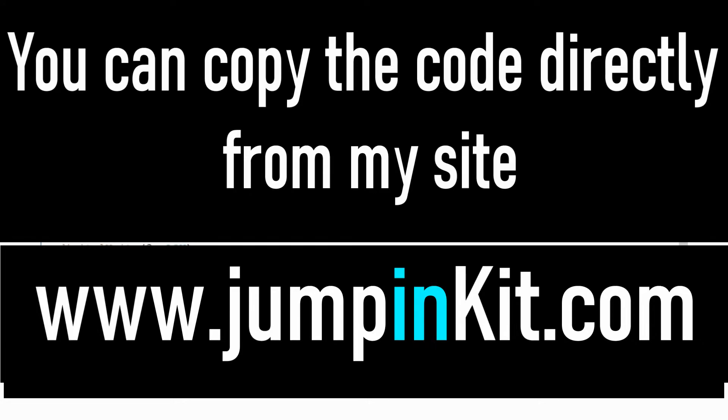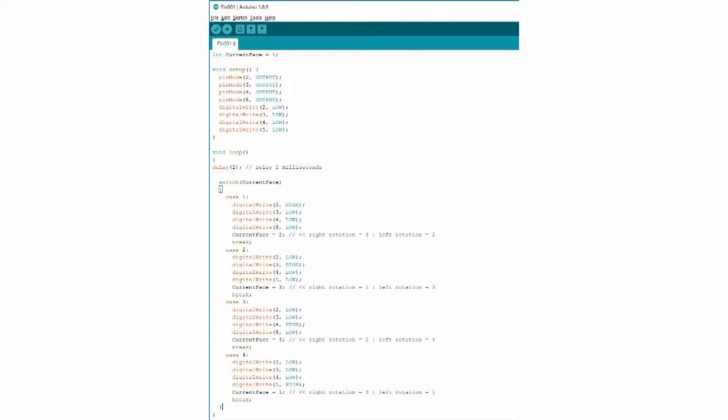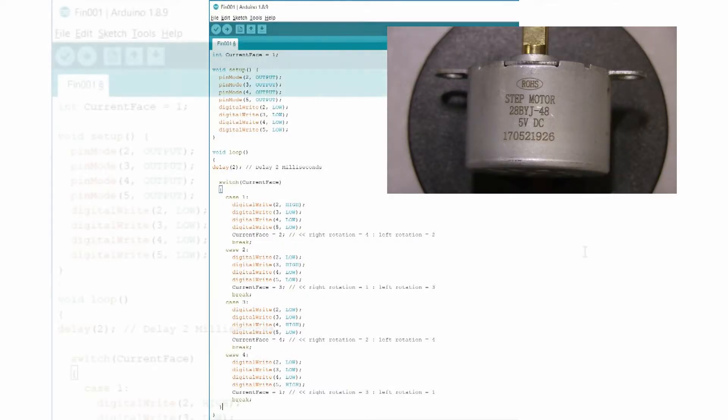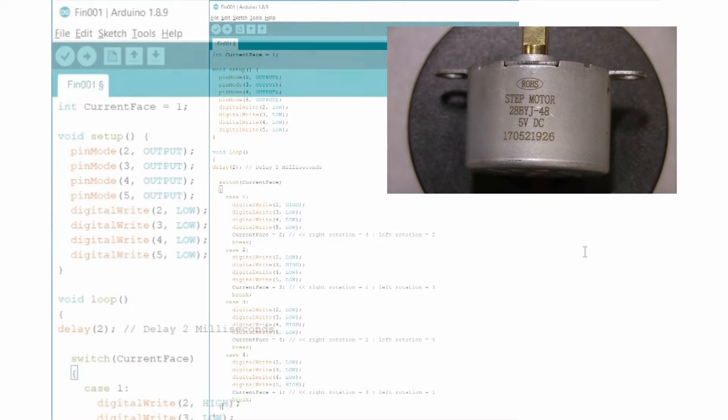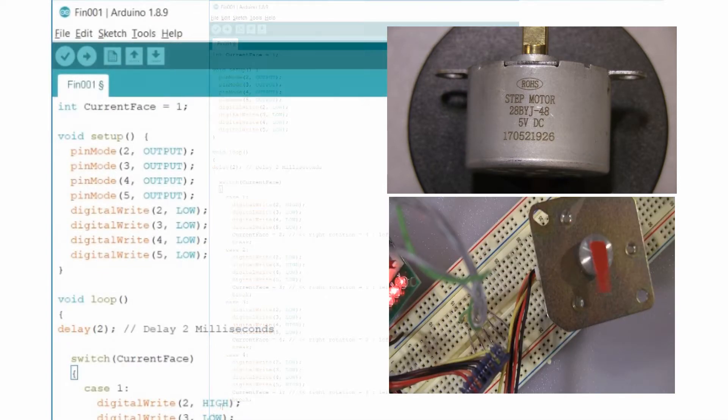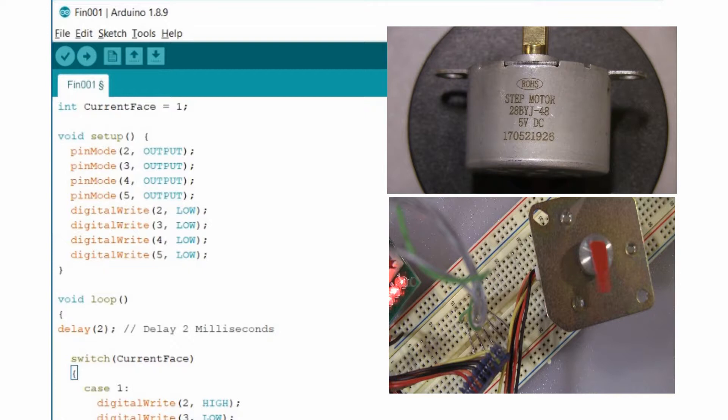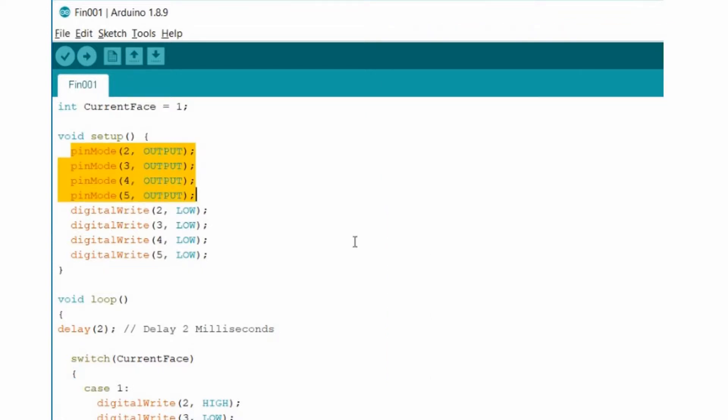You can copy the code directly from my site, JohnPinkit.com. This is the most basic code. We have two different setups. One for small motors like the 5-volt 28B-YJ and other for a little larger motor like the 12-volt. In either case, we start setting pins number 2, 3, 4 and 5 as an output and then set it to low.